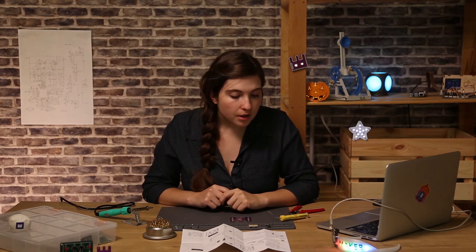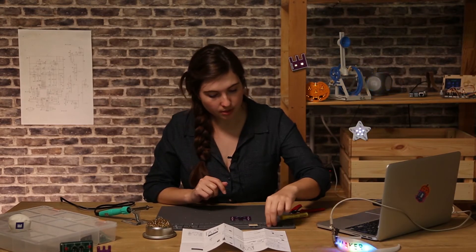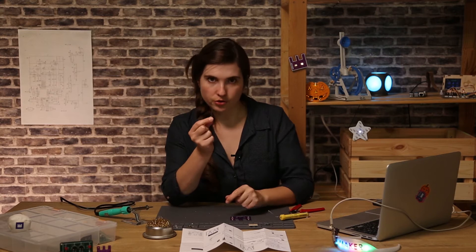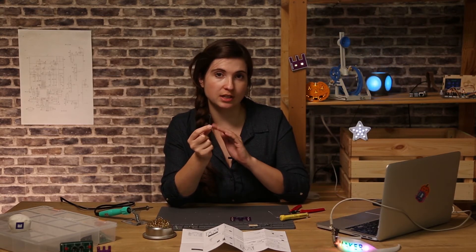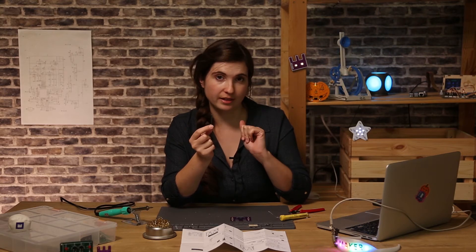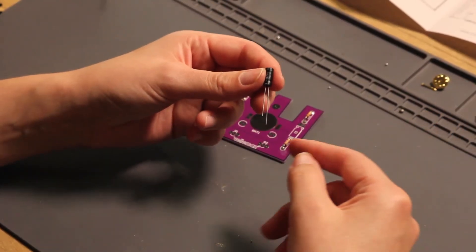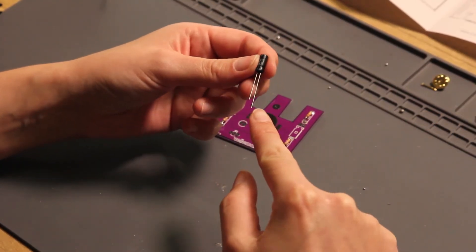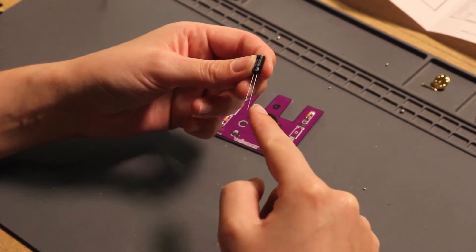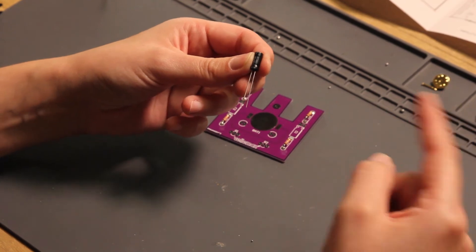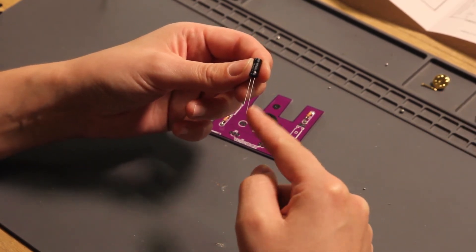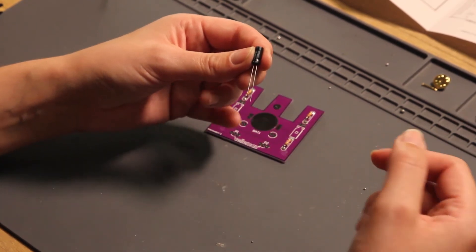Next up are the capacitors. The capacitors look like this and they are used to buffer the energy that flows from the battery to the LEDs. As you can see, the capacitor has a long leg and a short leg. The long leg is the positive side and the short leg is the negative side. Why? Because the energy will flow from the positive side to the negative side.